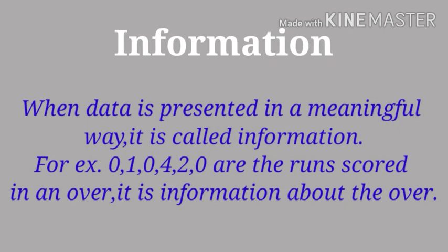Let's see what is information. When data is presented in a meaningful way, it is called information. For example, 010420 are the runs scored in an over. It is information about an over. Here we can see that these given numbers are the score in an over, so it has a meaning and these numbers provide us some meaningful information.